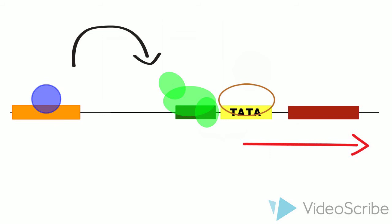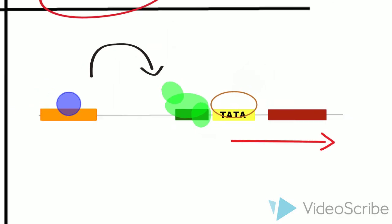If a repressor was to bind to the enhancer, RNA polymerase would not be able to start translating, and the gene would not be produced.